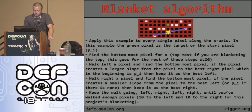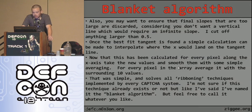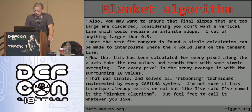Then you interpolate where the pixel would land for the green one, and that's your new pixel. The algorithm is explained on my website since the slides aren't on the CD. Also, ensure the final slopes aren't too large, as that would create a vertical line, which you don't want. Once the best tangent is found, a simple calculation interpolates where x lands on the tangent line. With that calculated for every pixel on the x-axis, take the new values and smooth them with simple averaging across roughly 10 left and 10 right values.